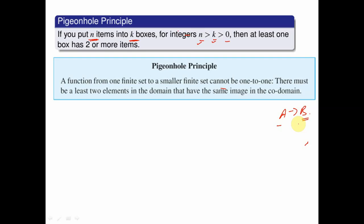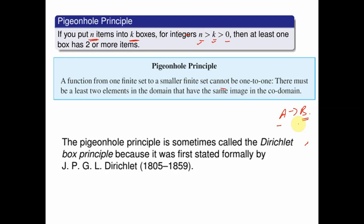Or in other words, at least two elements in the domain will have the same image in the codomain. The pigeon hole principle is also sometimes called the Dirichlet box principle because it was first stated formally by the mathematician Dirichlet.